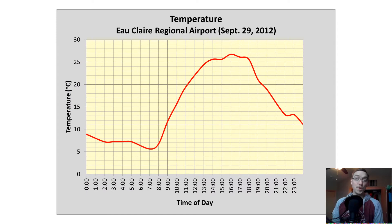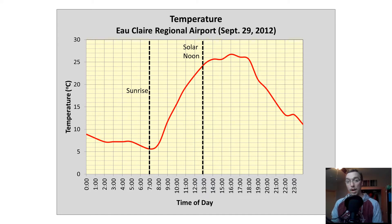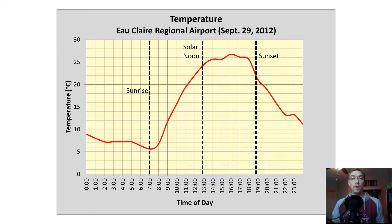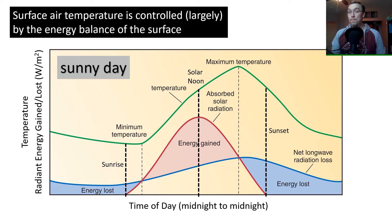We can see these relationships reflected in real data from the Eau Claire Regional Airport on September 29th, 2012. Here we can see sunrise with the coldest temperature immediately after, solar noon with the warmest temperature shortly thereafter, and sunset when temperatures start to rapidly drop off. This is what the diurnal temperature pattern looks like on a sunny day. But what happens when it's not sunny? Do we have this type of trend or does it vary?